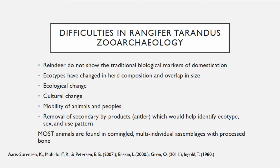Even though forest ecotypes are generally larger than tundra ecotypes, there is overlap in size. This difficulty is compounded by the manner in which we typically find reindeer remains, which is in commingled multi-individual assemblages of processed bone. This makes it hard to determine if a fragmented bone belongs to a butchered domestic tundra deer or a hunted forest deer, or if the assemblage is a combination of both. Reindeer are also usually processed for secondary bypass products such as antler, which is distinctive between subspecies and complicates this matter further. Additionally, as landscapes change, we can't depend on modern localities to determine the ecotypes of historical reindeer. Forests move, humans move, humans move animals, animals move humans, and animals move themselves.